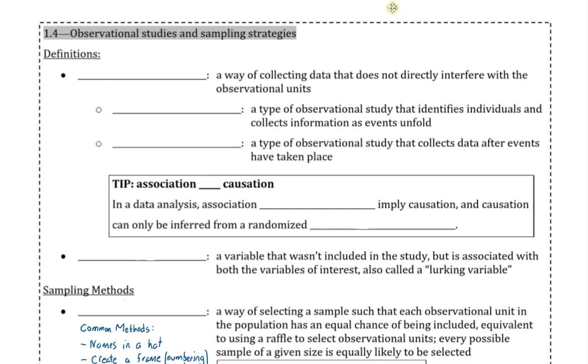There are a few definitions in this section that we would like to feel comfortable with. The first is an observational study. An observational study is a way of collecting data that does not directly interfere with the observational units or the individuals in the study. This can also be described as watching and not interacting with.